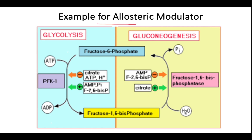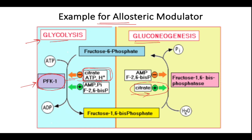Examples for allosteric modulators: glycolysis and gluconeogenesis are both reciprocally regulated. The inhibitor citrate acts as a negative allosteric modifier of phosphofructokinase-1, which is a key enzyme in glycolysis, thereby inhibiting glycolysis. Similarly, citrate acts as a positive allosteric modulator of fructose-1,6-bisphosphatase, and by stimulating this enzyme, gluconeogenesis is initiated.